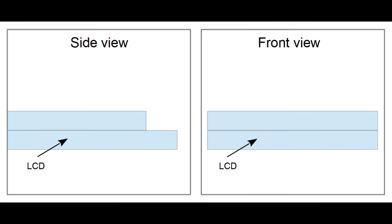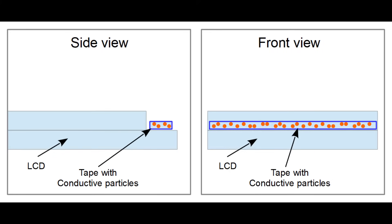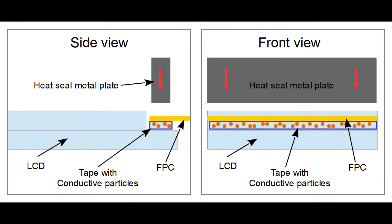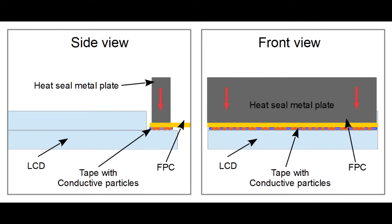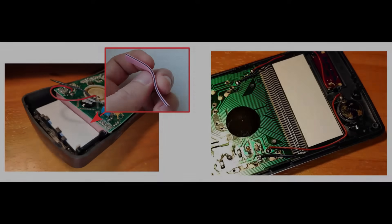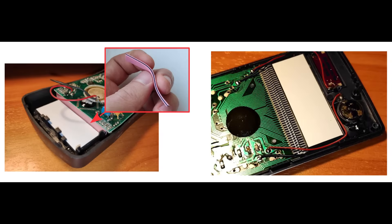First, the conductive tape is attached to the connection area of the LCD screen. After that, a device called a heat seal is used. The heat seal has a metal plate that presses the two surfaces together, and because the metal plate is heated, the conductive tape melts and bonds the two surfaces. At the same time, because of the conductive particles inside the tape, an electrical connection is established. After the metal plate cools down, the pressure is removed and the bonding procedure is finished. The same procedure can be applied on the PCB board side to the FPC.